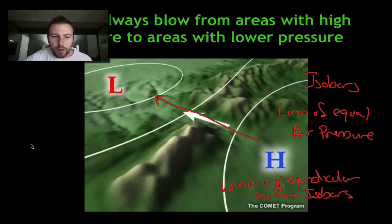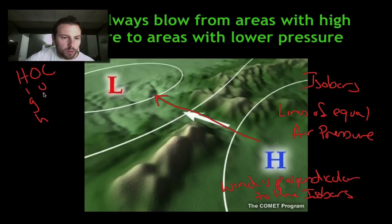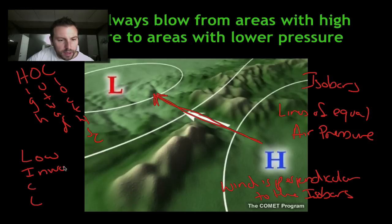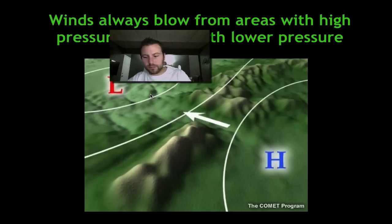Also, remember, we had two acronyms that we used for high pressure and low pressure. High, or HOCK, is high, outward, and clockwise. So we have that outward movement of air going towards our low. Low pressure, inward, counter, clockwise. So our low pressure is going in.